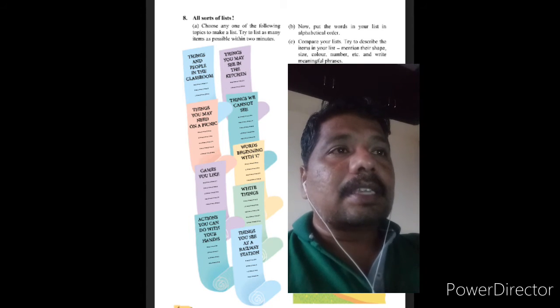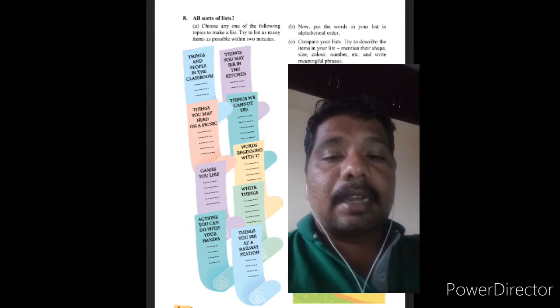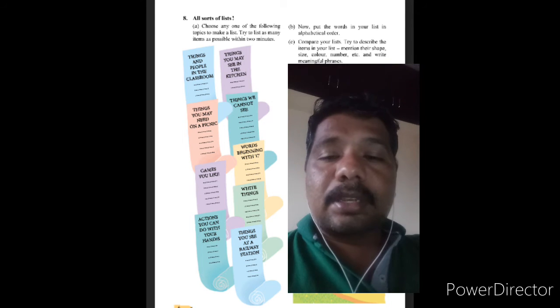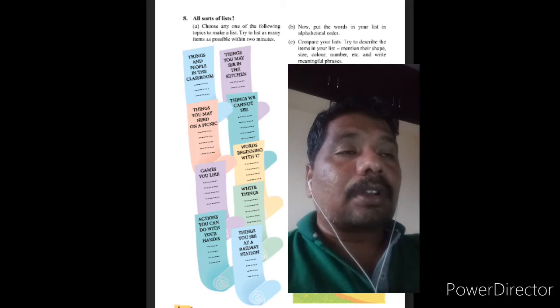Second topic is things you may see in the kitchen at home. In the kitchen you can see many things like pot, gas, water tank. All these things you will see. You have to make the list here.